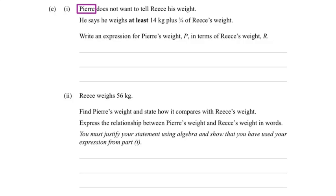So P being Pierre and R being Rhys. One of the keywords, as you can see it's actually written in bold, is at least. And of course the other information is he weighs at least 14 kgs plus 3 quarters of Rhys' weight.